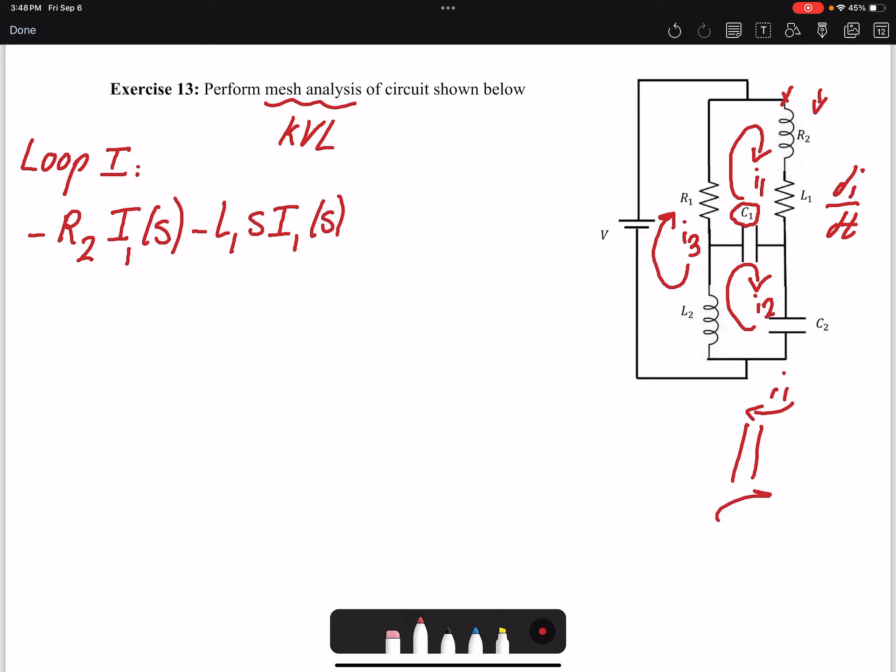So I have I1 minus I2, and the impedance for C is 1 over C1*s.